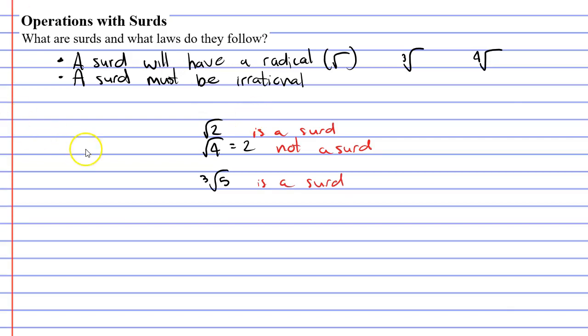A cube root that is not a surd might be the cube root of 27, which just equals three. And because it's a whole number and doesn't have a decimal that goes on forever, we can say that it's not a surd. Because it's not an irrational number.